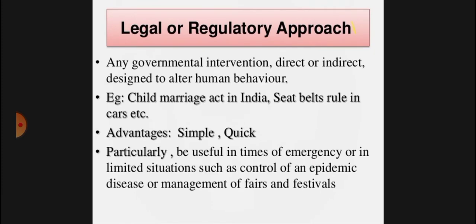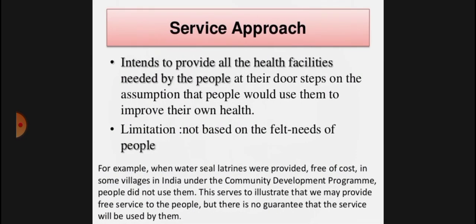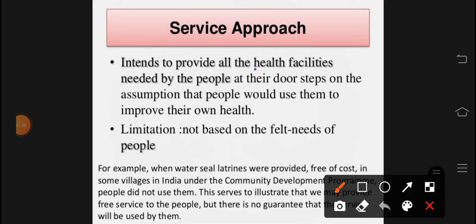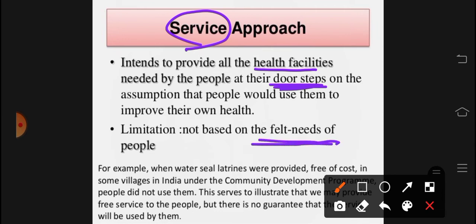Then it is the service approach. What happens in the service approach? In health facilities, we provide health services to the doorsteps — services are provided at home. They can access all the services for their health and improve it. For example, villages built in India were constructed with water seal latrines. We used to see what the environment was, so people were informed. But things were done without proper identification, so it didn't work well. They built water seal latrines but people didn't use them.